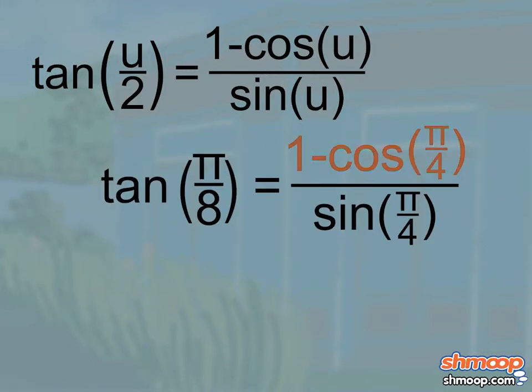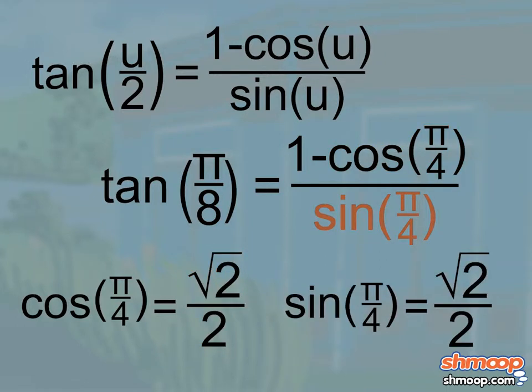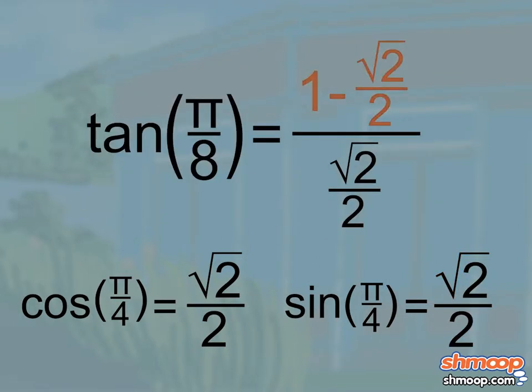One minus cosine of pi over four all divided by sine of pi over four. Since cosine of pi over four equals the square root of two over two, and the sine of pi over four equals the square root of two over two, our formula becomes one minus the square root of two over two all over square root of two over two.